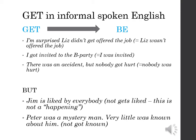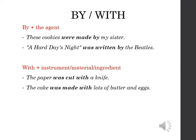'By' plus the agent is used to say who or what carries out an action — for example: 'These cookies were made by my sister,' 'A Hard Day's Night was written by the Beatles.' We use 'with' plus instrument, material, or ingredient to say what the agent used — for example: 'The paper was cut with a knife' and 'The cake was made with lots of butter and eggs.'